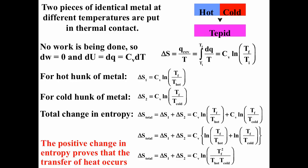For two pieces of metal — one hot, one cold — in thermal contact, we can also calculate ΔS. Since no work is done, dU = dq = C_V dT, assuming C_V is temperature-independent. So ΔS_hot = C_V·ln(T_final / T_hot) and ΔS_cold = C_V·ln(T_final / T_cold). ΔS_total = ΔS_hot + ΔS_cold = C_V·ln[(T_final² / (T_hot · T_cold))]. The positive change in entropy proves that heat transfer from the hot to the cold piece occurs spontaneously.